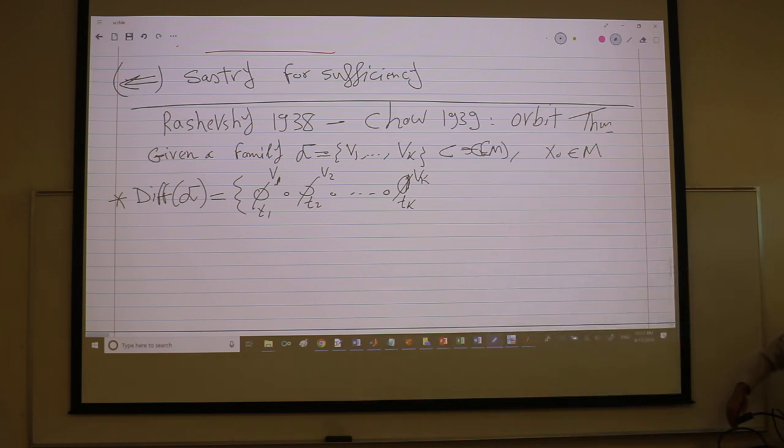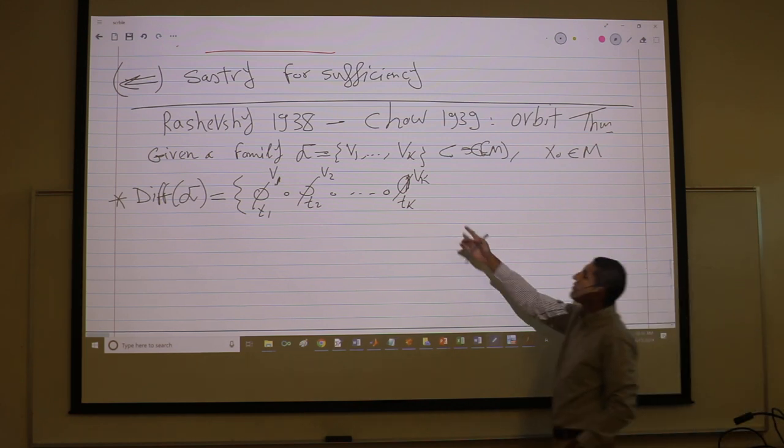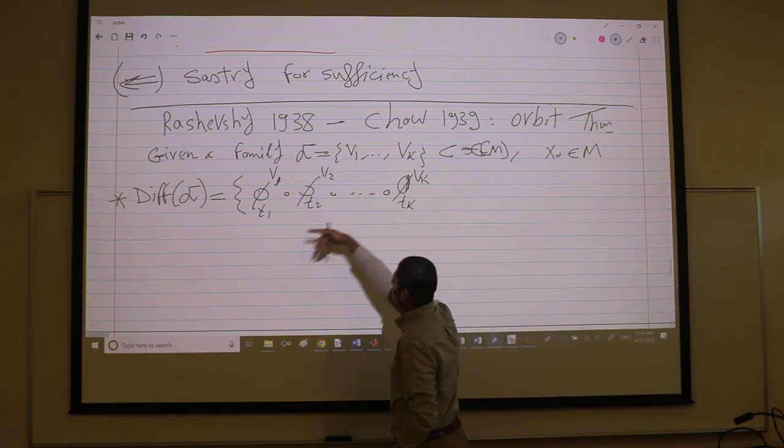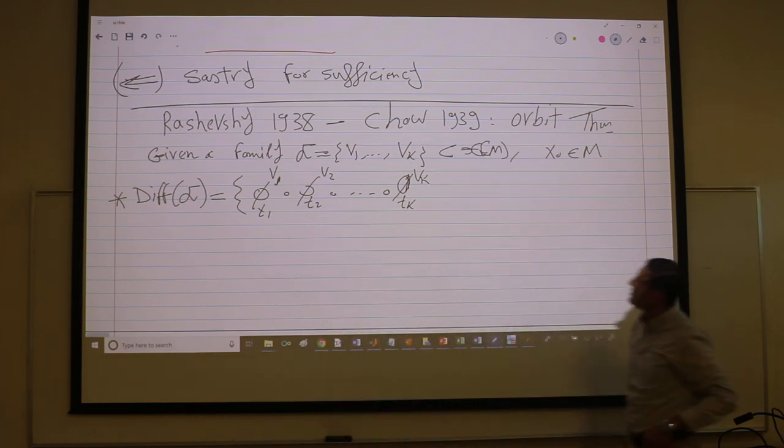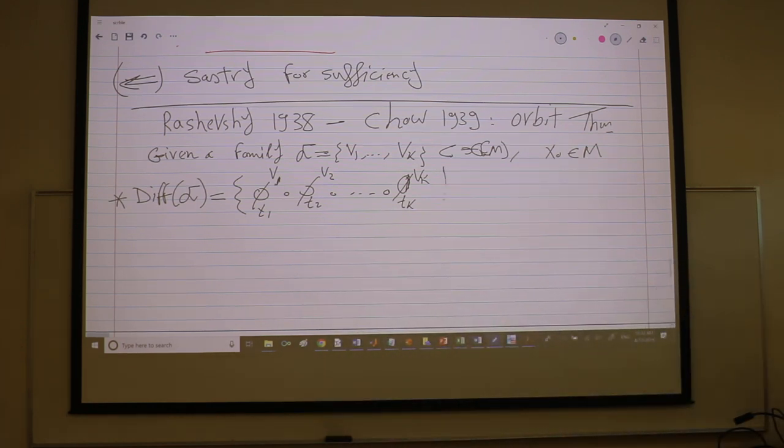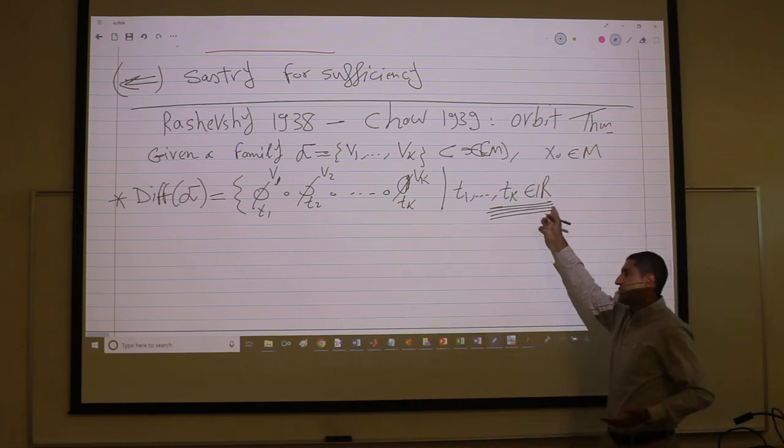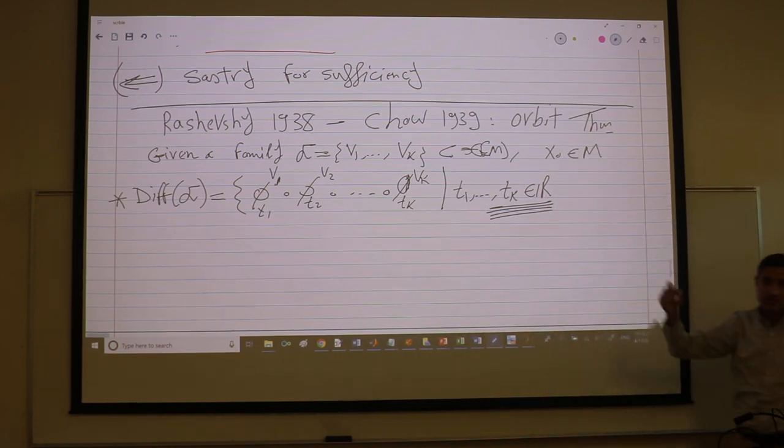These guys are maps, so if you evaluate at a point, you will get a new point. They map points on m to other points on m by flowing along these vector fields each one for some time. Concatenate the way you like. The order doesn't matter such that t1 to tk, they are reals, and this is a very big issue. This creates the whole dilemma of non-linear control, but we'll talk about it later. But the point is, this is reals, it's not positive.